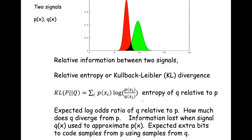One of the ways we can measure the relationship between two signals is the relative entropy, or Kullback-Leibler divergence. The KL divergence is not a proper distance metric because it's not symmetric and does not satisfy the triangle inequality. Our KL divergence of Q relative to P can be thought of as an expected log odds ratio — an expected importance weight — and this measures, if you were going to take signal Q and use it to approximate P, what is the average extra number of bits needed to encode P using samples from Q? If they are very different, that number of bits is larger; if they are very similar, the importance weights are close to one, and you need fewer bits.